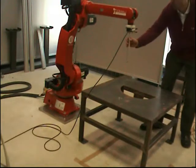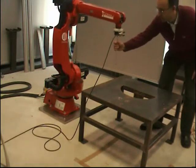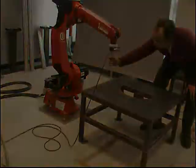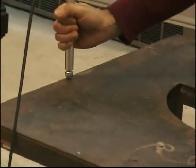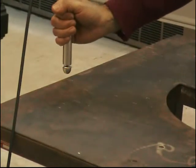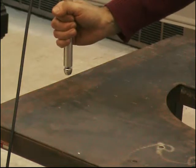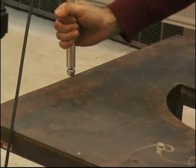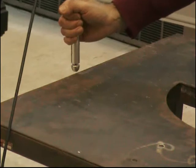This video shows an example of the walkthrough programming mode during a contact situation. In this particular case, the human operator tries to keep the tool in contact with the hard surface, the edge of an iron table.